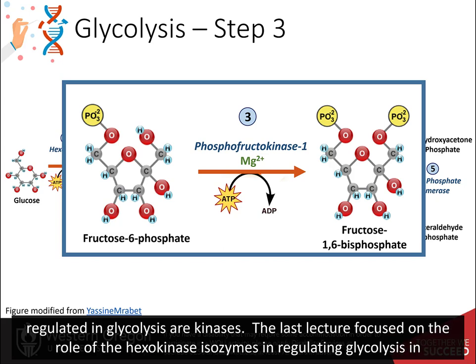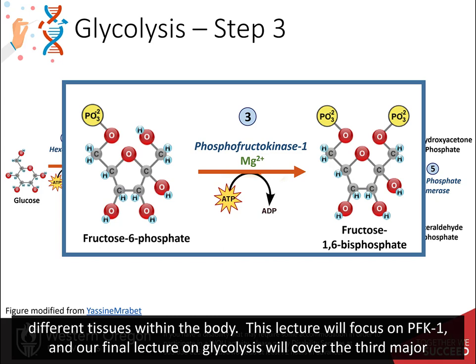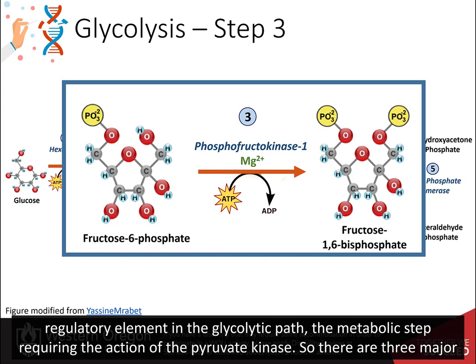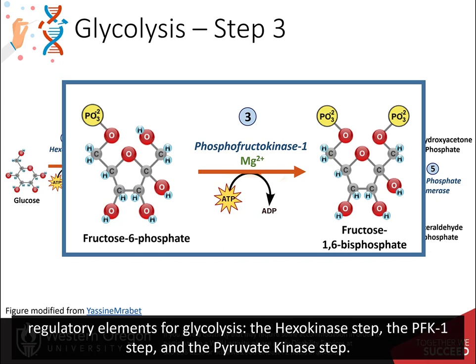The last lecture focused on the role of the hexokinase isozymes in regulating glycolysis in different tissues within the body. This lecture will focus on PFK1, and our final lecture on glycolysis will cover the third major regulatory element, the metabolic step requiring the action of pyruvate kinase. So there are three major regulatory elements for glycolysis: the hexokinase step, the PFK1 step, and the pyruvate kinase step.